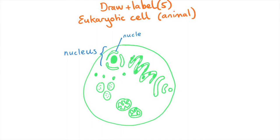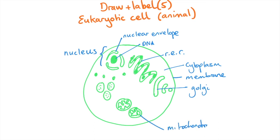It's enough to put RER for rough endoplasmic reticulum. Cytoplasm and membranes usually worth a mark. Golgi apparatus, but you can just write Golgi. Mitochondria and lysosomes.